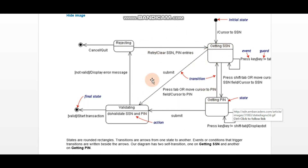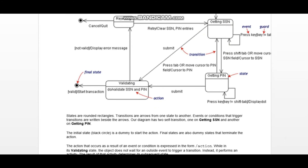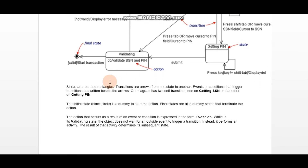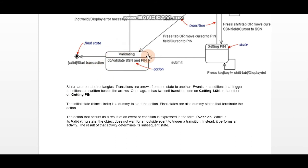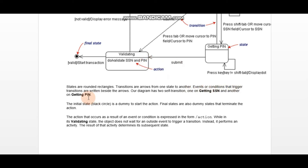After seeing the flow of this diagram, let's review what states are — they are rounded rectangles. Transitions are arrows from one state to another state. Events and conditions that trigger transitions are written beside the arrows.